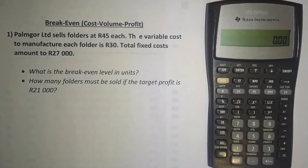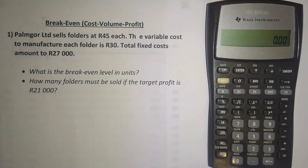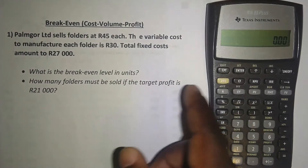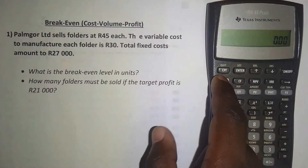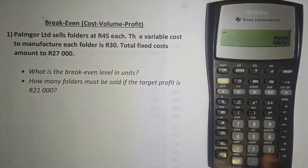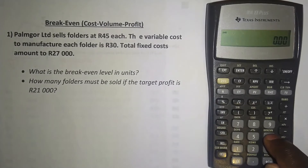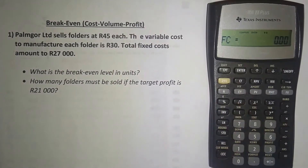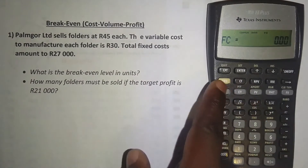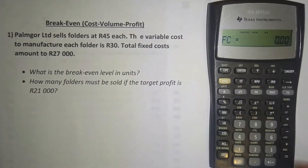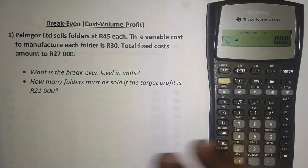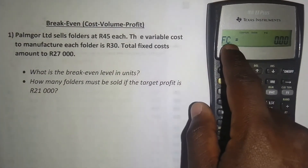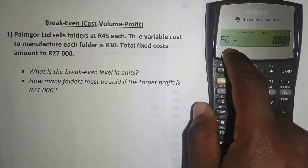For the first question — what is the break-even level in units — here's how you do it using this calculator. Press the second function button and then press number six, where it says 'break-even' on top of it. So that's second function and then number six, and then we can start.